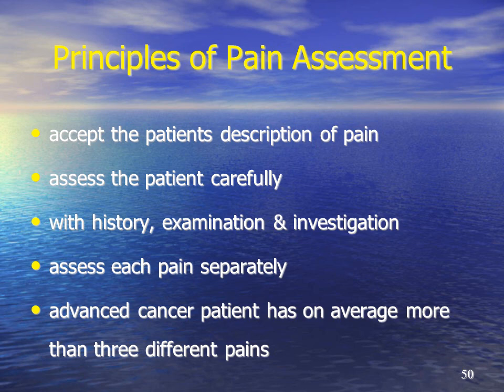When a patient comes to you with pain, we have to accept the patient's description of the pain and it's important to get the history. An initial careful assessment is important with history, examination, and then appropriate investigations for that area. If a patient has a number of pains then we need to look at the cause of those pains — they may all be due to bone pain, for example, in a patient who has advanced prostate cancer. Patients with advanced cancer have an average of about three pains.